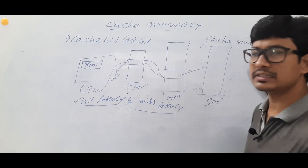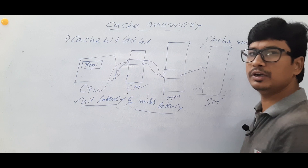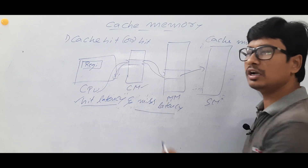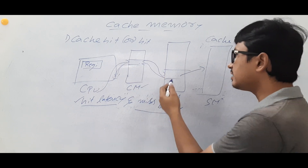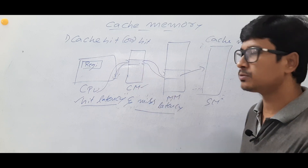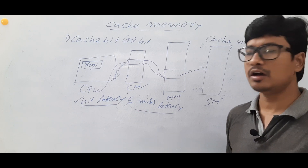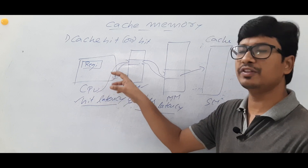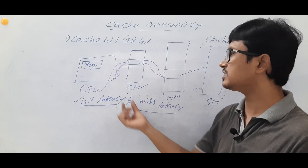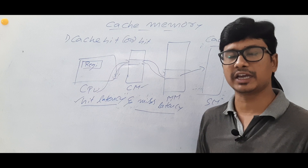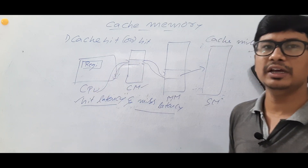Miss latency is when the instruction the CPU is searching for is not available in the cache memory. The cache memory will then search it in the main memory, and if available there, it fetches it to the cache memory and then to the CPU for execution. So hit latency applies when the item is found in cache; miss latency applies when it must be retrieved from main memory.